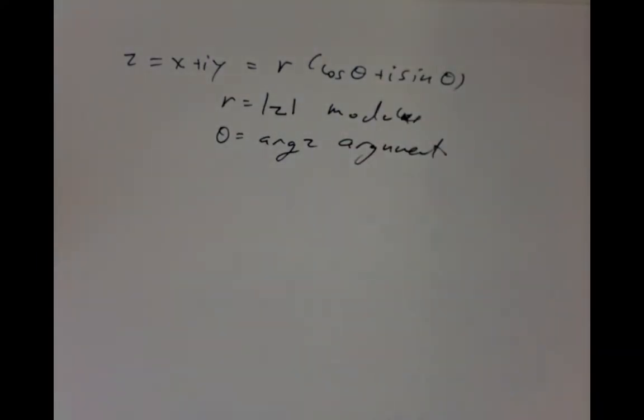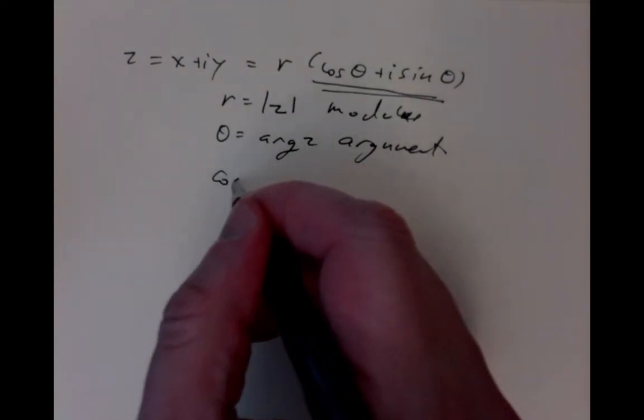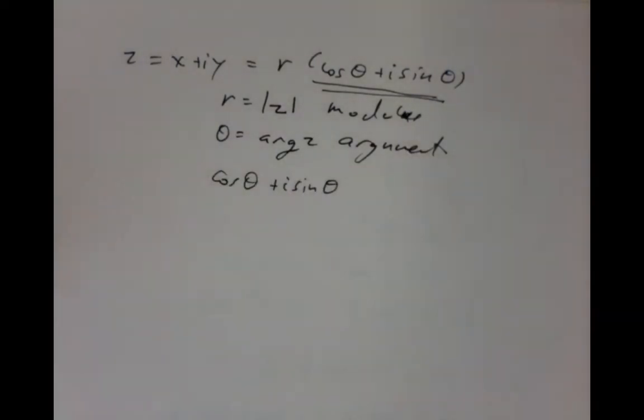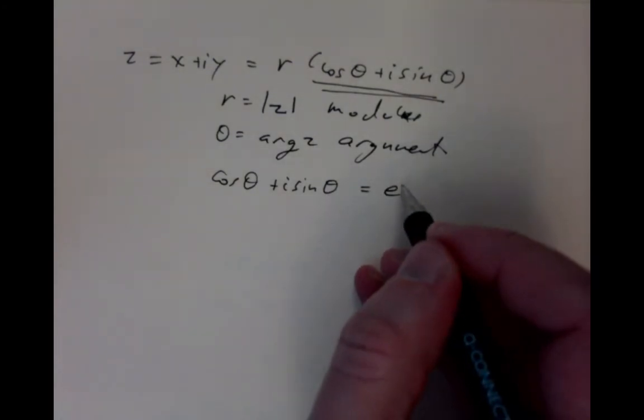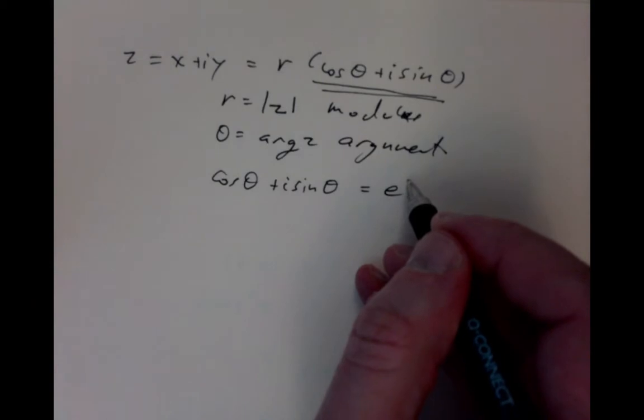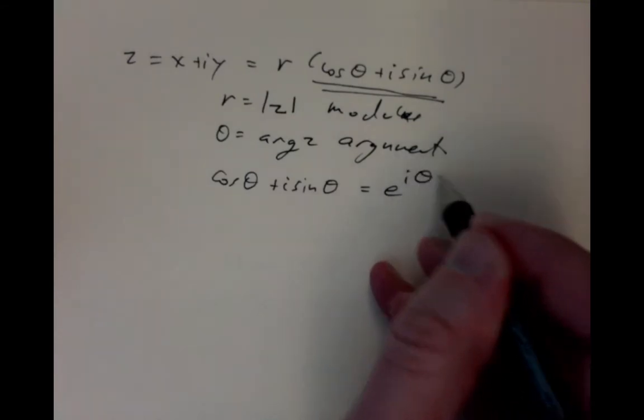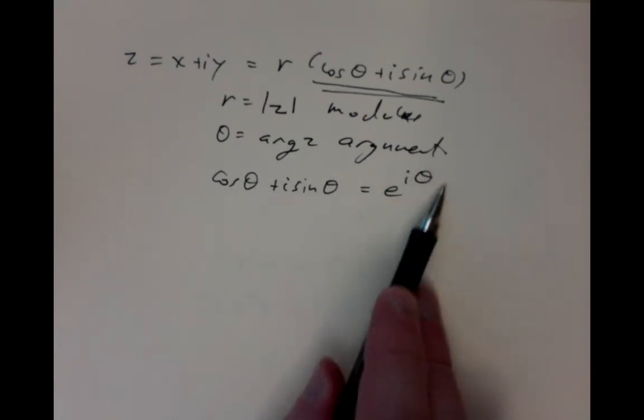This expression also came up in our study of the exponential function. We could actually write it in a more convenient format, using fewer symbols, as the exponential of something. When we took the exponential of i times y, we got cos y plus i sine y. From our study of the exponential function, this is just exactly this nice little expression here, and we'll use it a lot.